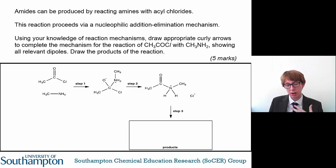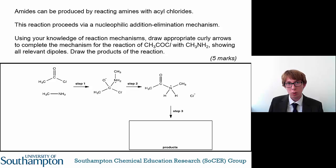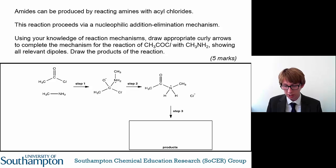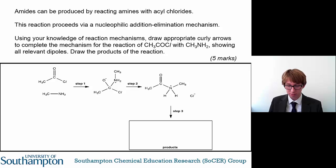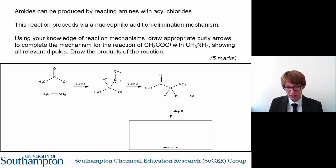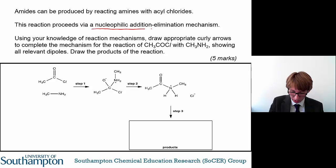So this next question: amides can be produced by reacting amines with acyl chlorides. You may have also heard acyl chlorides be called acid chlorides. This reaction proceeds via a nucleophilic addition-elimination mechanism.